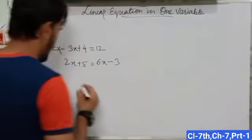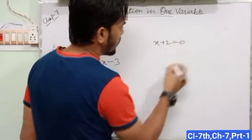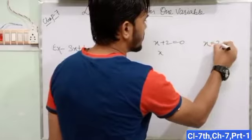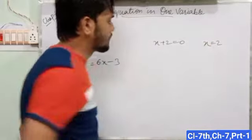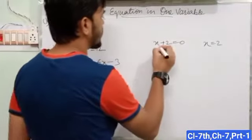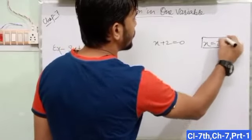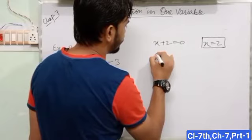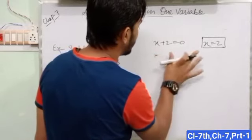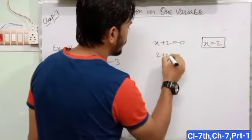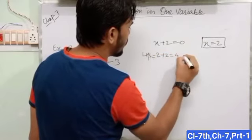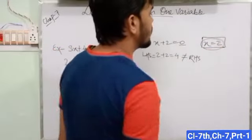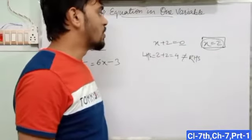For example, if we have x + 2 = 0 and the value of x = 2, we have to find out whether 2 satisfies the equation or not. Put the value of x: LHS = 2 + 2 = 4, which is not equal to RHS because RHS is 0. So the value x = 2 does not satisfy x + 2 = 0.